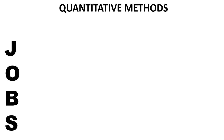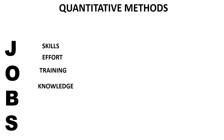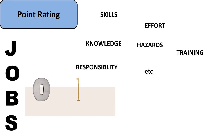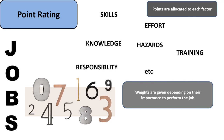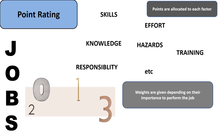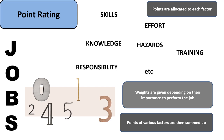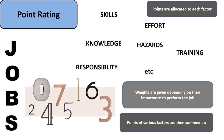In the case of quantitative methods, the key factors of a job are selected and then measured. Point rating is one of the quantitative methods. Under this, jobs are broken down based on various identifiable factors such as skill, effort, training, knowledge, hazards, responsibility, etc., and points are allocated to each of these factors. Weights are given to factors depending on their importance to perform the job. Points allocated to various factors of a job are then summed up, and the sum of points gives an index of the relative significance of the jobs that are rated.